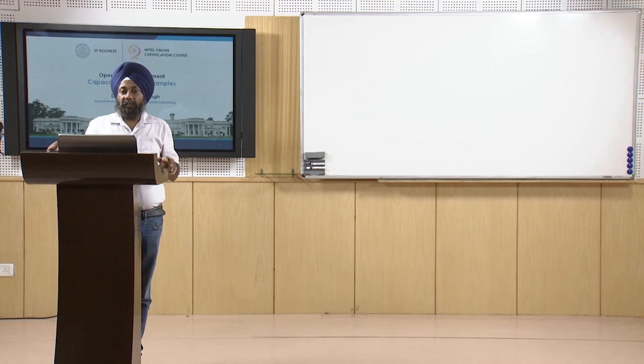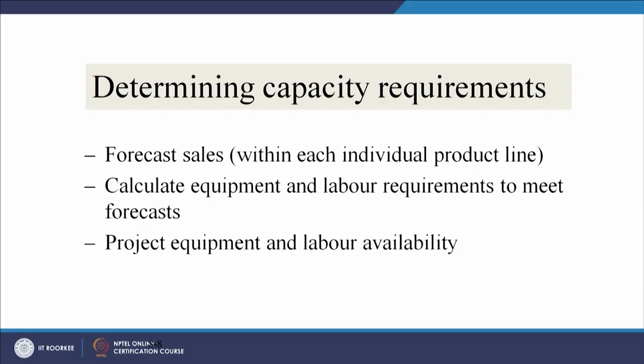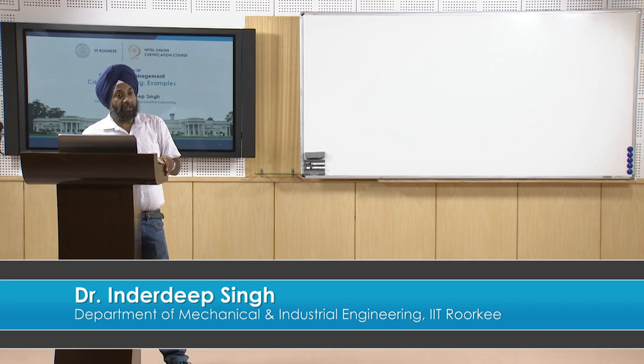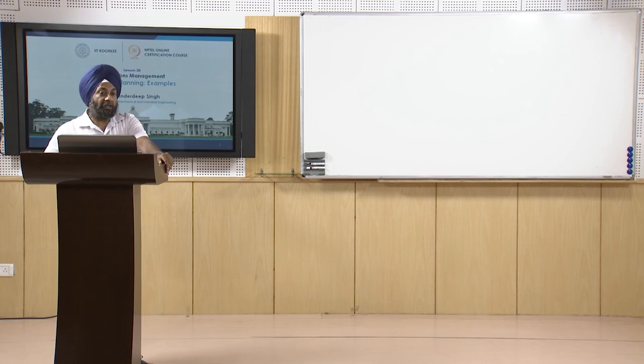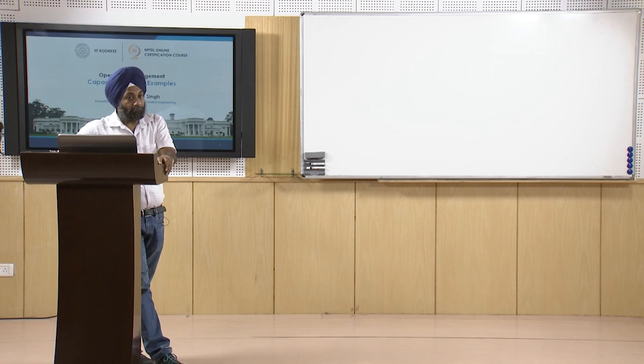When doing capacity planning, we must focus on determining capacity requirements. In aggregate production planning we see the regular time and overtime production quantities. In overtime production we spend more because we have to pay workers more - so we can consider a trade-off.